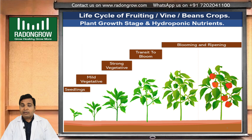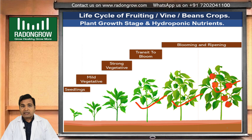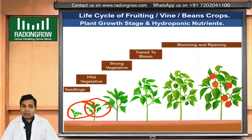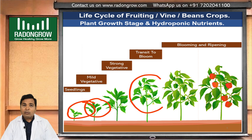In this way, we will get maximum production and maximum output. So these are the different stages of vine crop or tomato crop. In one line: in leafy greens there is only one stage — vegetative growth. But in vine crops like tomato, cucumber, capsicum — the first stage is vegetative growth, the next is transit to bloom where the plant starts flowering, and the last is blooming and ripening.